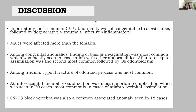In our study, the most common CVJ abnormality was of congenital cause, followed by degenerative, trauma, infective, and inflammatory causes. Males were affected more than females. Among congenital anomalies, basilar invagination was most common, mostly seen in association with other abnormalities. Atlanto-occipital assimilation was the second most common, followed by os-odontoidium. Among trauma, type 2 fracture of the odontoid process was most common. Atlanto-axial instability or subluxation was the most important complication, seen in 20 cases, most commonly associated with atlanto-occipital assimilation. C2-C3 block vertebrae was also a common associated finding, seen in 18 cases.